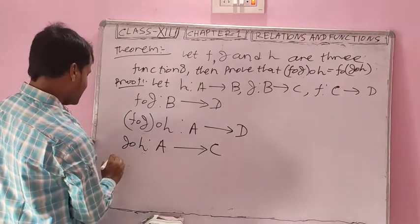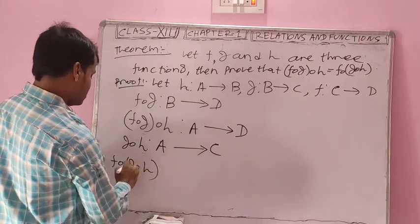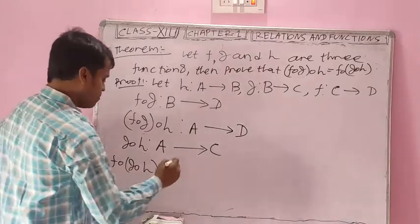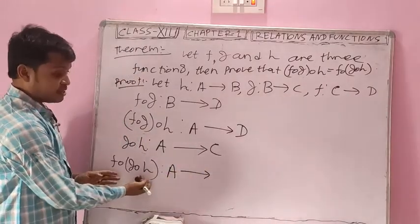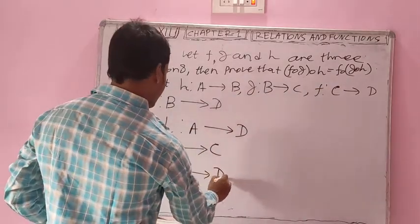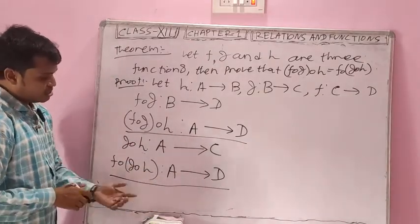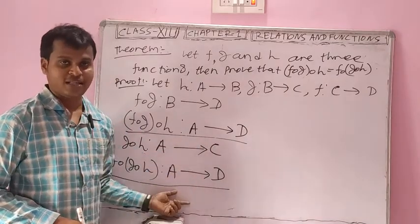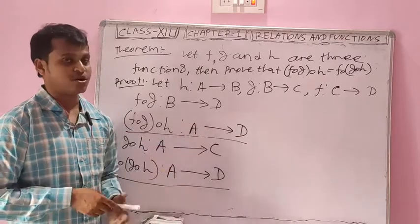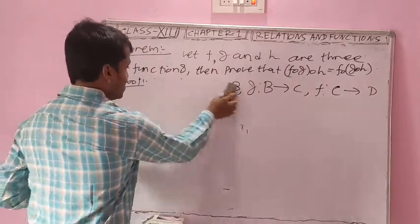Now for f∘(g∘h): the domain equals the domain of g∘h, which is A, and the codomain equals the codomain of f, which is D. So f∘(g∘h) also goes from A to D. Both sides have the same domain A and codomain D. Now we are going to prove this.